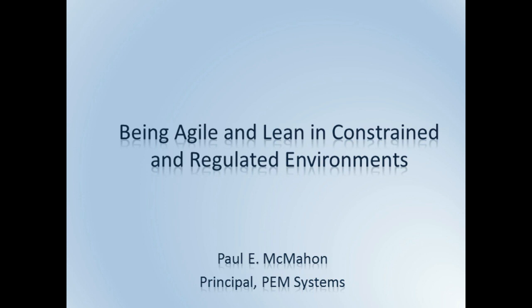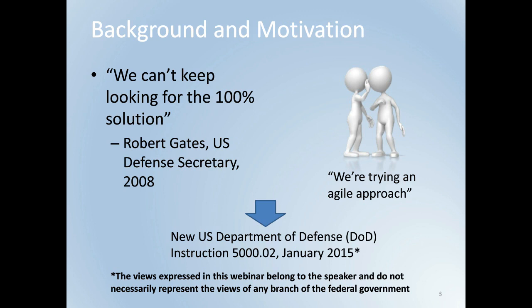Let's get started with a little background and motivation. In 2008, then Secretary of Defense Robert Gates said that we can't keep looking for the 100% solution. More precisely, he said our conventional programs seek 99% solutions that take years, whereas the wars we are in today require 75% solutions in months. Before that point, people were trying agile approaches in defense companies but weren't openly talking about it because the belief was there was something wrong with being agile in a regulated environment. Gates' comments in 2008 marked a key turning point that changed how the DOD viewed agile and lean approaches, and it eventually led to the new DOD instruction 5000.02.